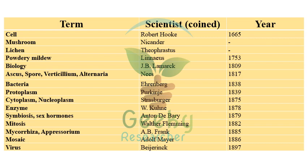Now for important terms and the scientists behind them: The term 'cell' was given by Robert Hooke in 1665. 'Mushroom' was coined by Nicander. 'Lichen' was coined by Theophrastus. 'Powdery mildew' by Linnaeus in 1753. 'Biology' by Lamarck in 1809. 'Ascus spore,' 'Verticillium,' and 'Alternaria' were coined by Nees in 1817. 'Bacteria' was coined by Ehrenberg in 1838.